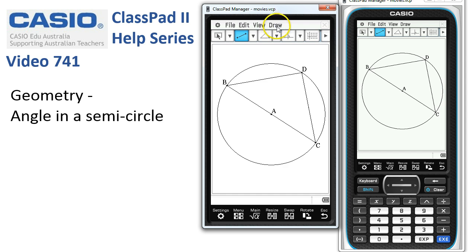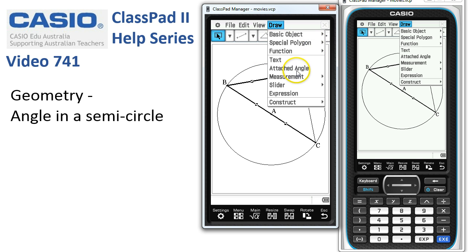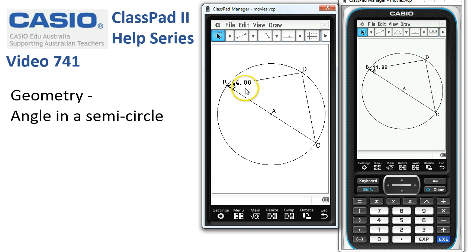Next job is to attach a few angles to this diagram. So by choosing these two... Oops! I should have gone to the select tool first. I'm going to choose these two sides and tap on draw attached angle. And ClassPad measures the angle and shows it on the diagram.